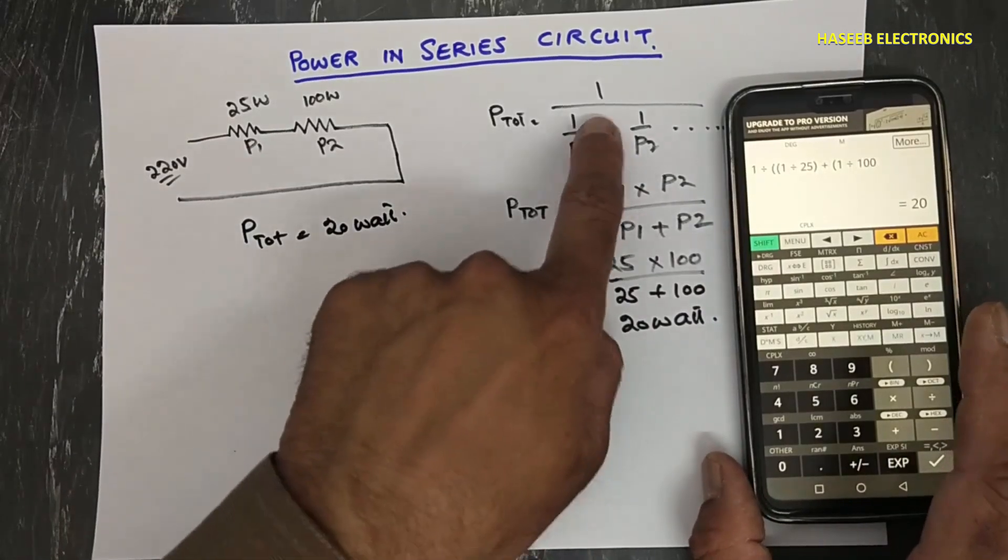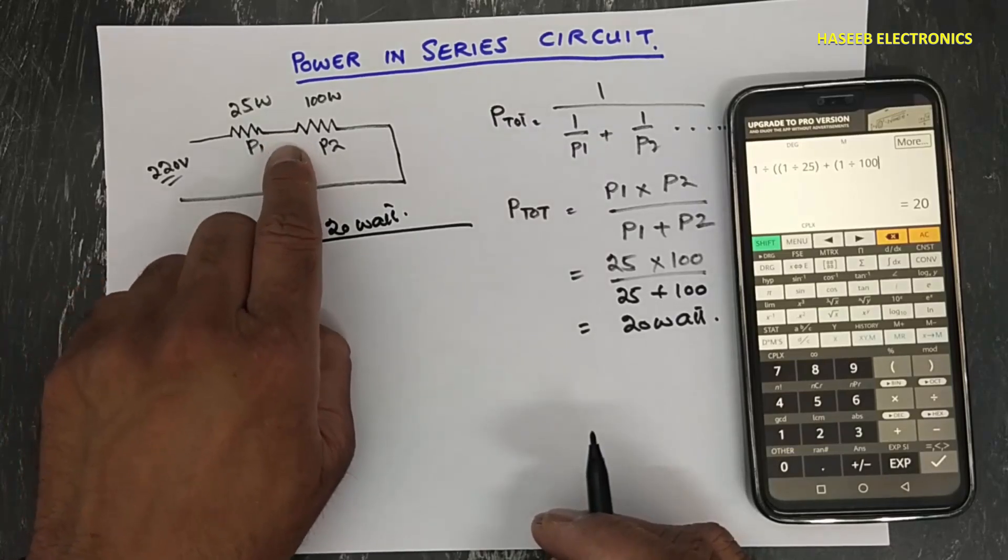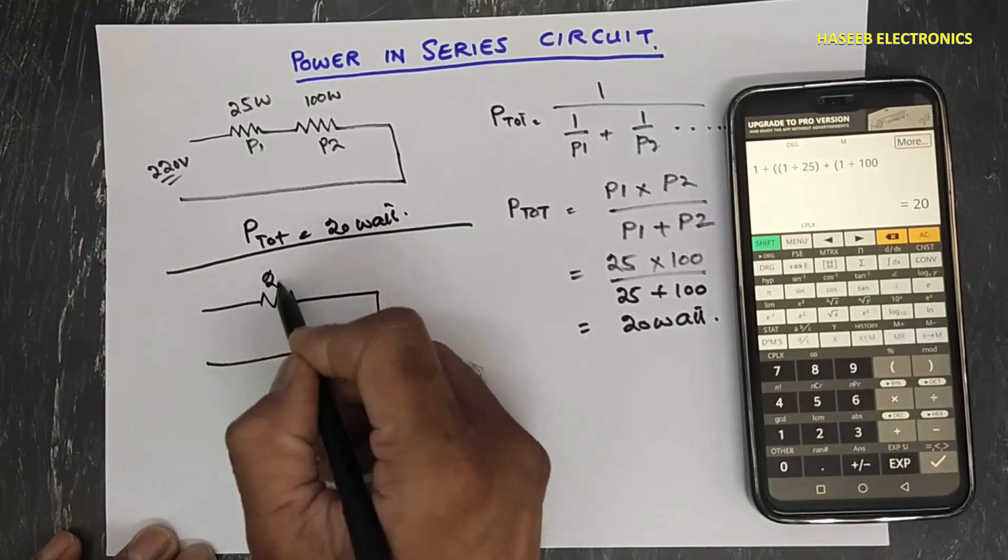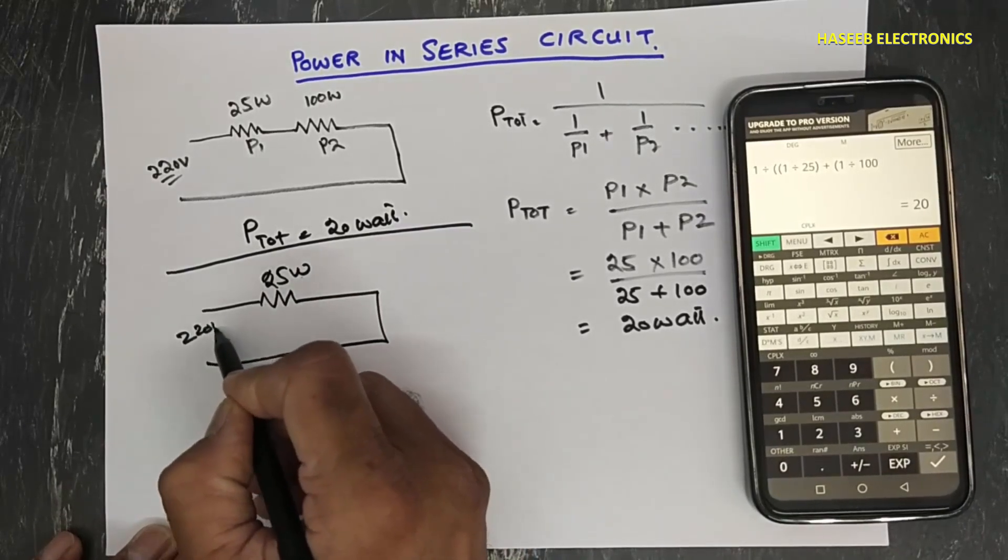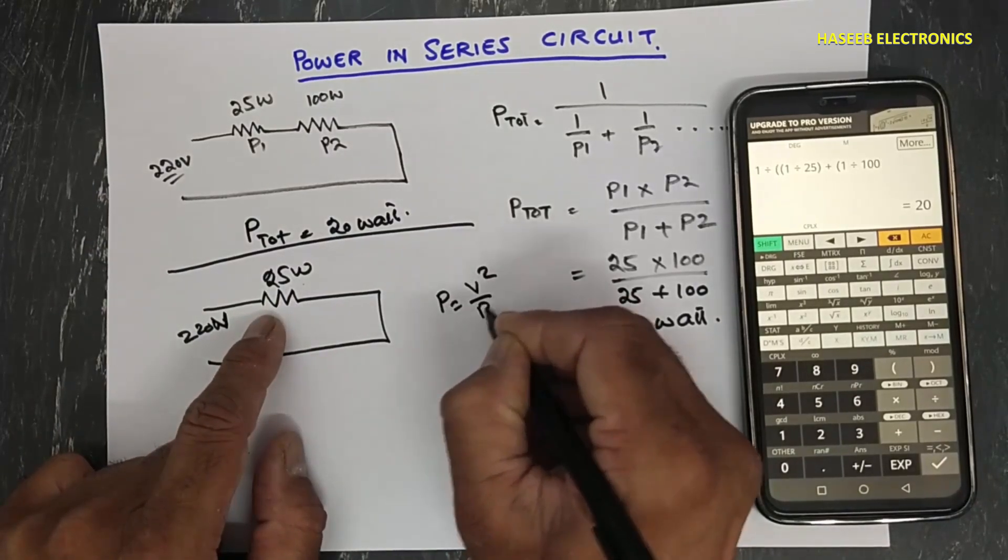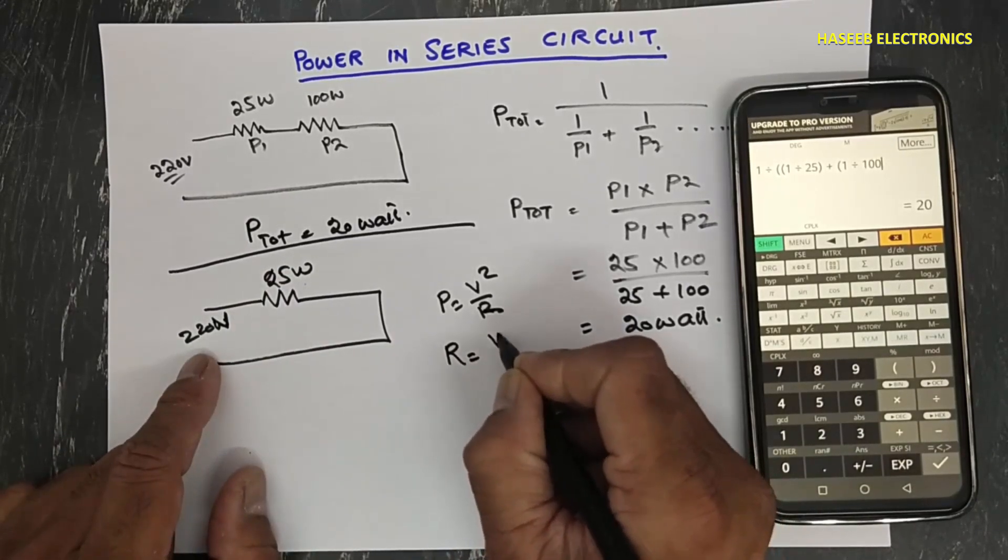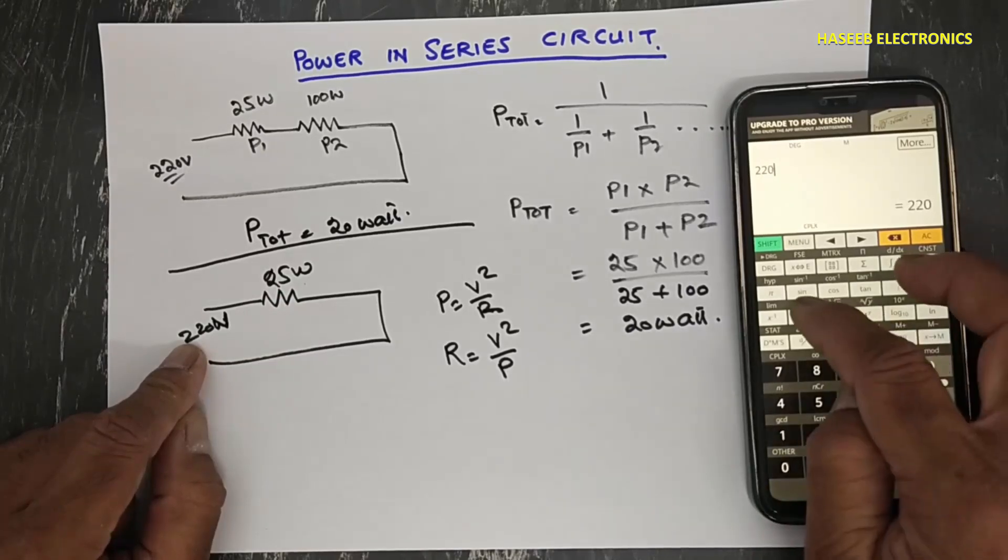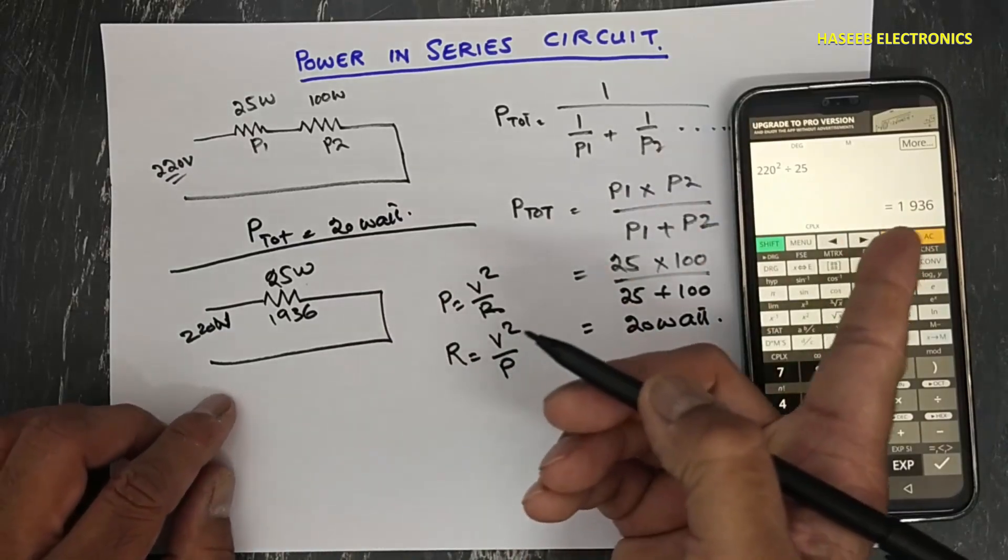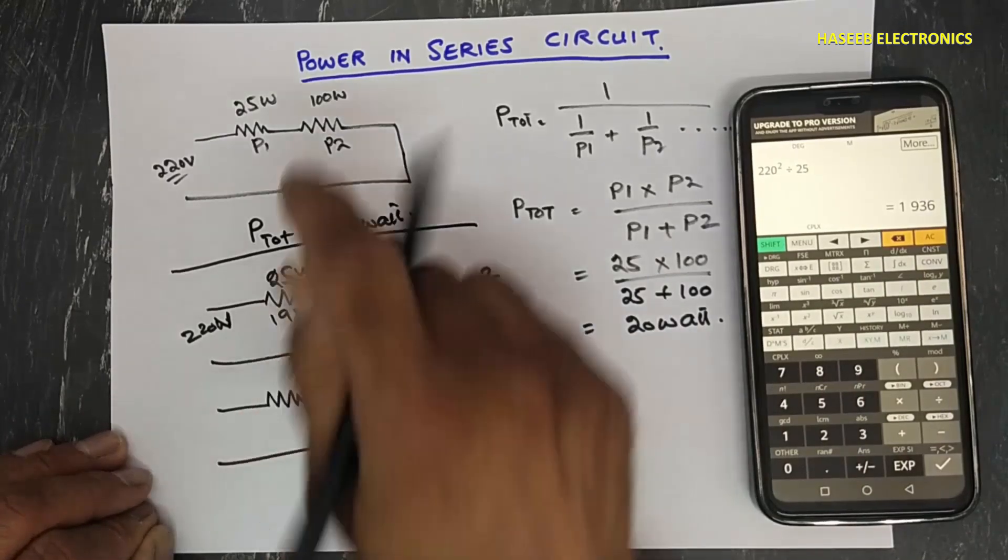We can now verify it. Let's suppose I have just only one load, that is this condition: 25 watt. Now what is the resistance of this load? P is equal to V square over R, because we have voltage, we have power. R is equal to V square over P. 220 square divided by 25 watt, it is 1936 ohms. Same way, if we have 100 watt load, R2 equals V square, 220 square divided by 100 watt, it is 484 ohms load.